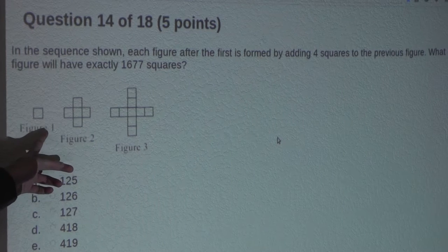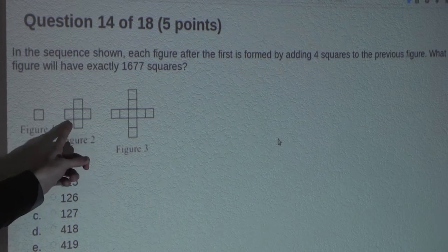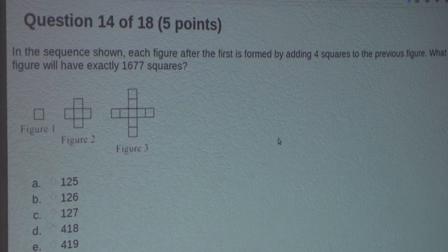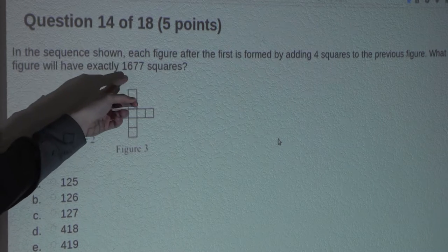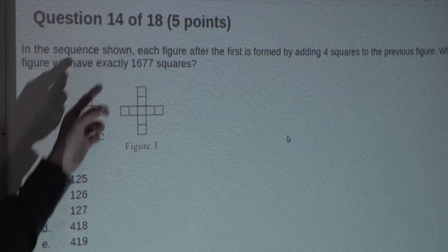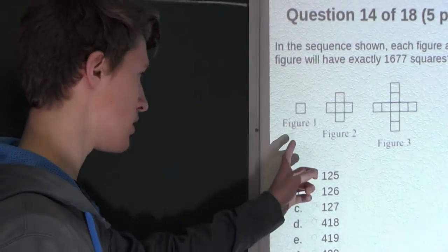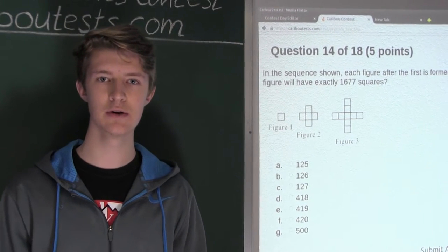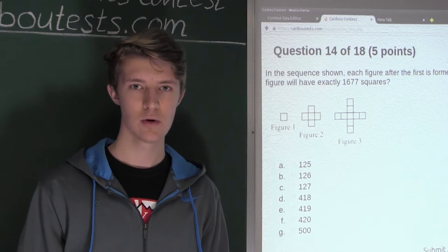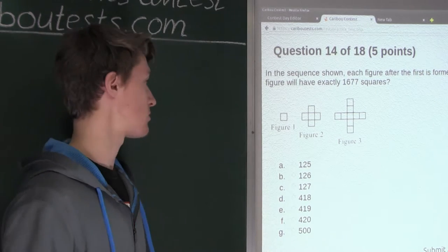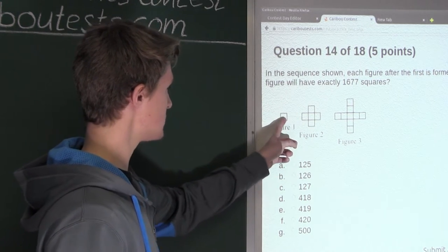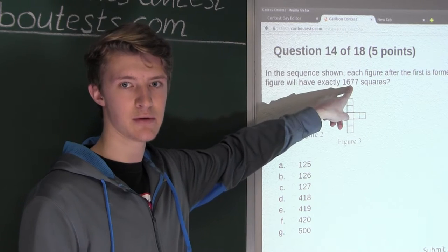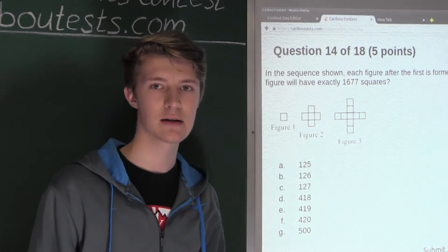We can see figure 1 has only one square, figure 2 will have four more than that, and figure 3 will have four more than figure 2. We want to find which figure number will have exactly 1,677 squares. It would take way too much time to draw out all these figures, so we want to find a formula that gives us a relationship between the number of squares and the corresponding figure number, so we can plug in 1,677 to find the exact figure number.